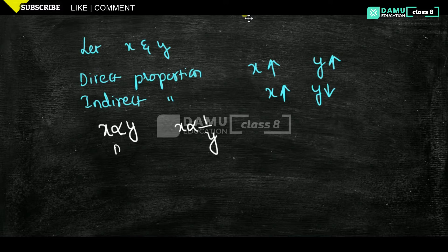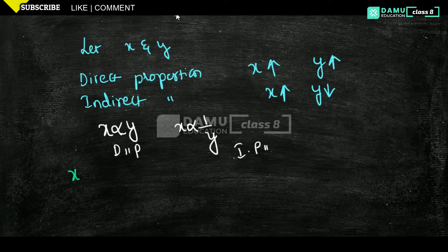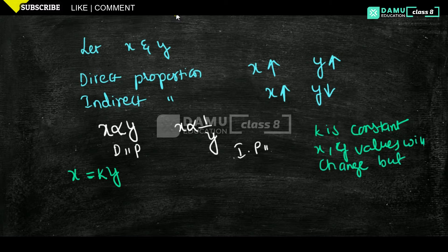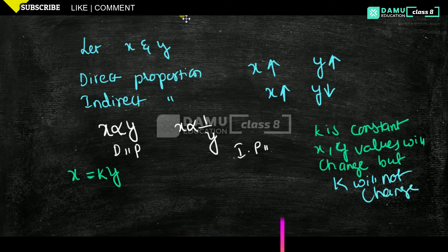If X is inversely proportional to Y, that means X is proportional to 1 by Y. We cannot write this in equation format directly, so we convert it: X ∝ Y becomes X = K, where K is a constant. K will not change at any time — if X and Y values change, K remains constant.